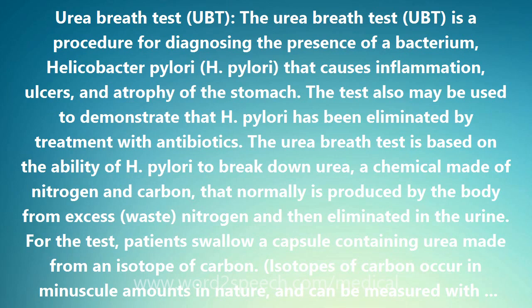If H. pylori is present in the stomach, the urea is broken up into nitrogen and carbon as carbon dioxide. The carbon dioxide is absorbed across the lining of the stomach and into the blood. It then is excreted from the lungs in the breath. Samples of exhaled breath are collected and the isotopic carbon in the exhaled carbon dioxide is measured. If the isotope is detected in the breath, it means that H. pylori is present in the stomach. If the isotope is not found, H. pylori is not present.